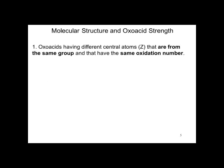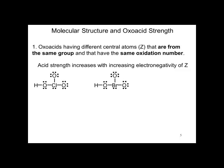Oxoacids having different central atoms, different Z's, that are from the same group and have the same oxidation number. Acid strength increases with increasing electronegativity of Z. So compare HClO3 and HBrO3. Cl is more electronegative than Br, it's closer to fluorine, therefore HClO3 is a stronger acid than HBrO3.